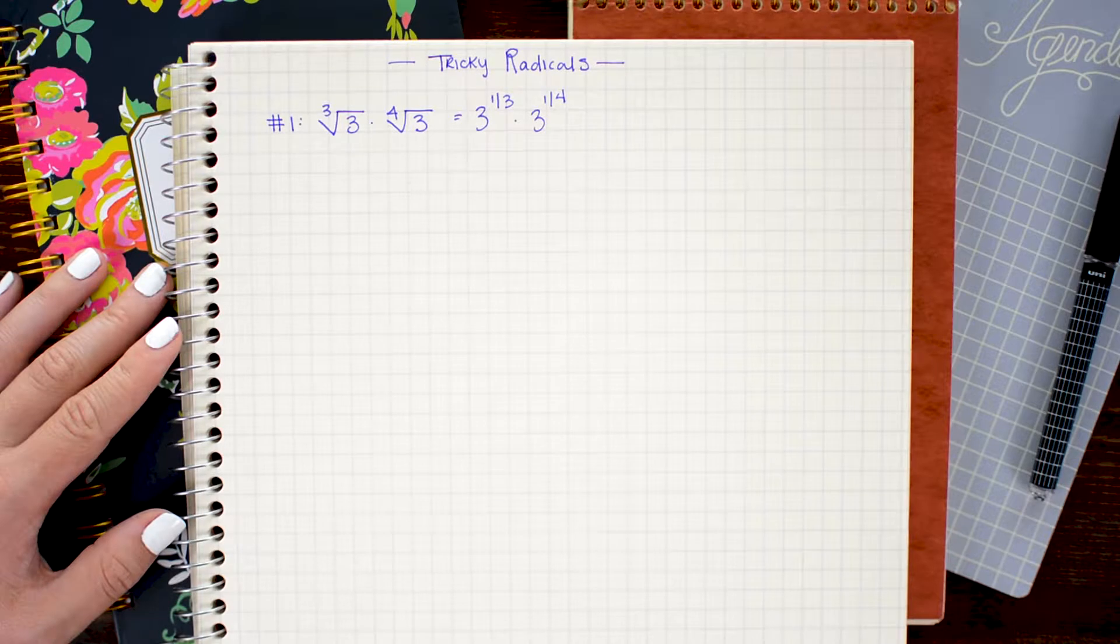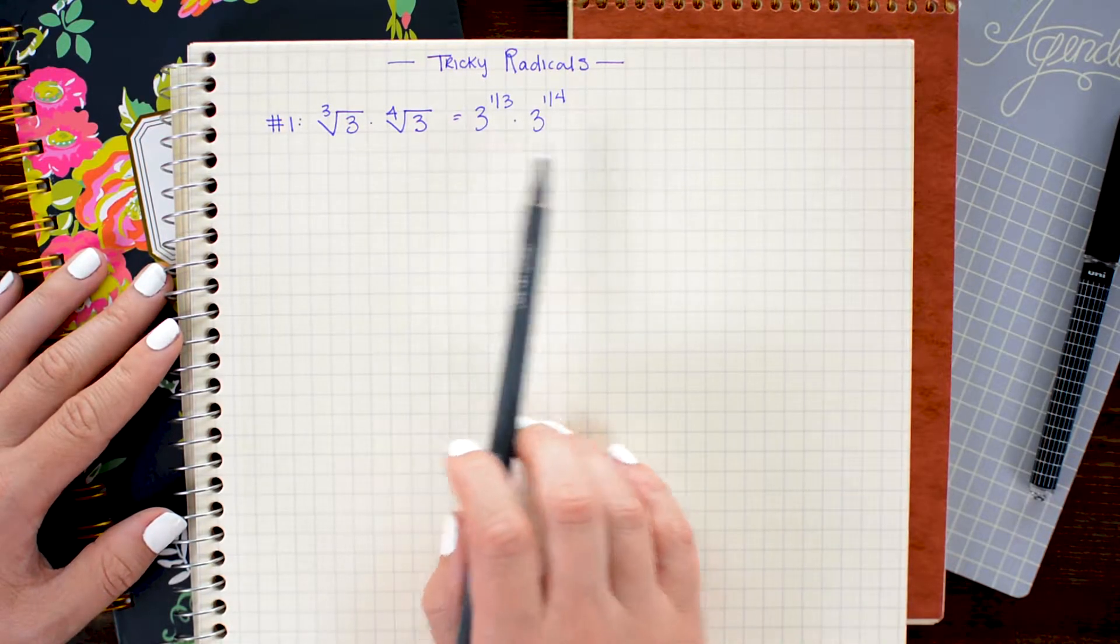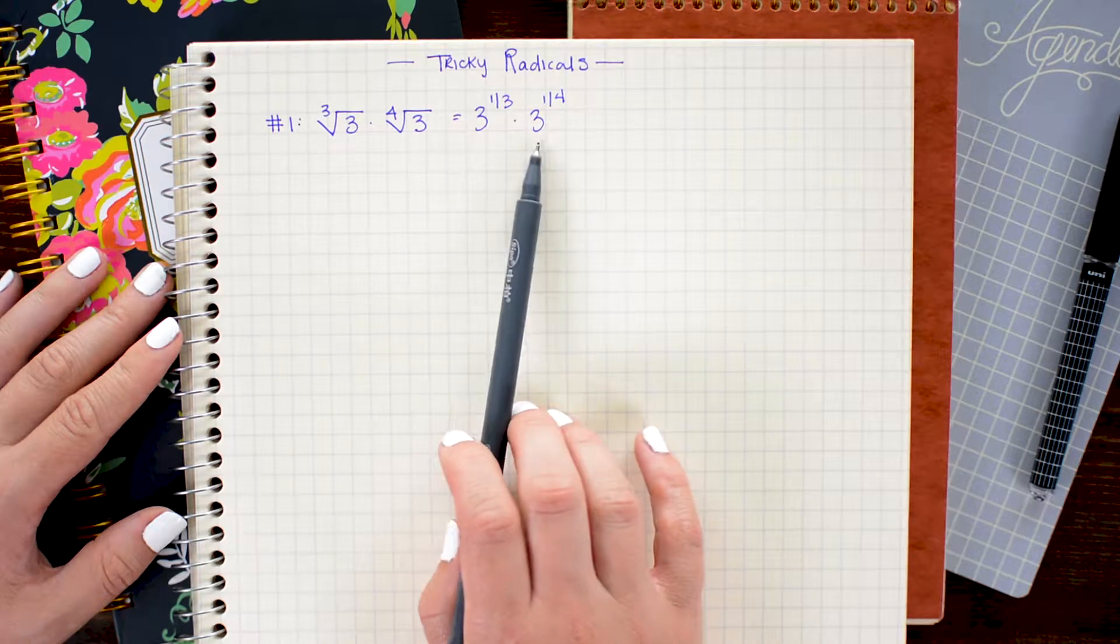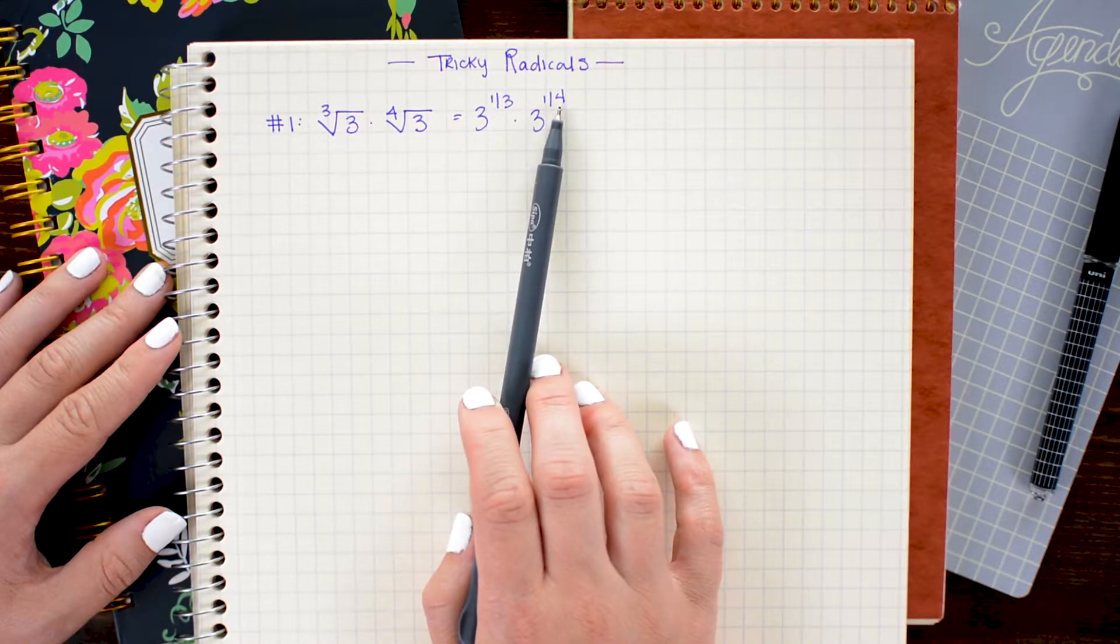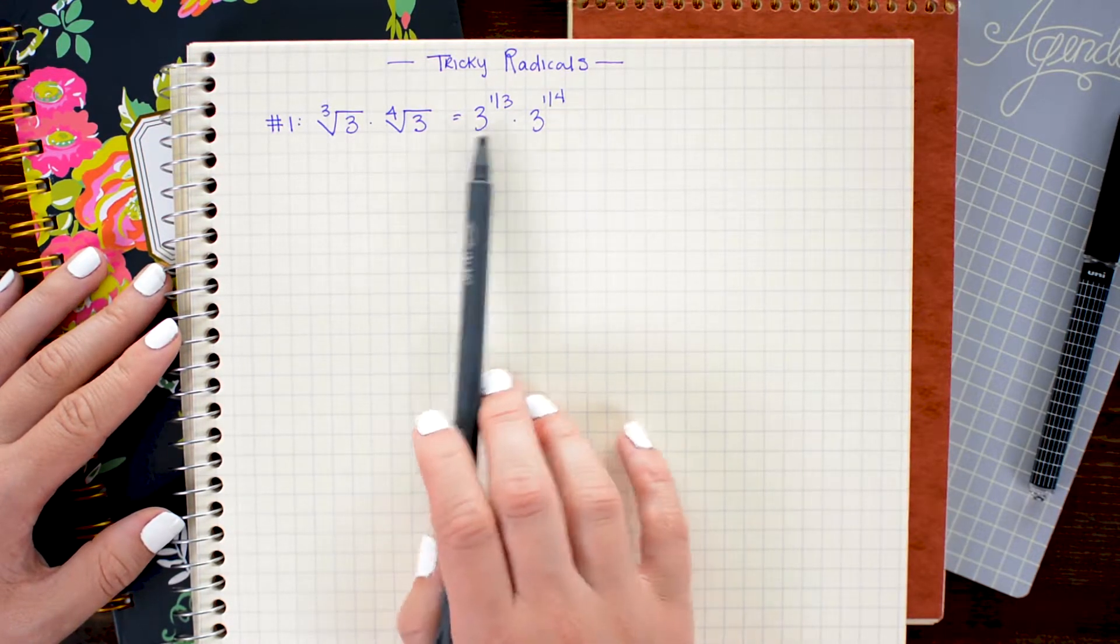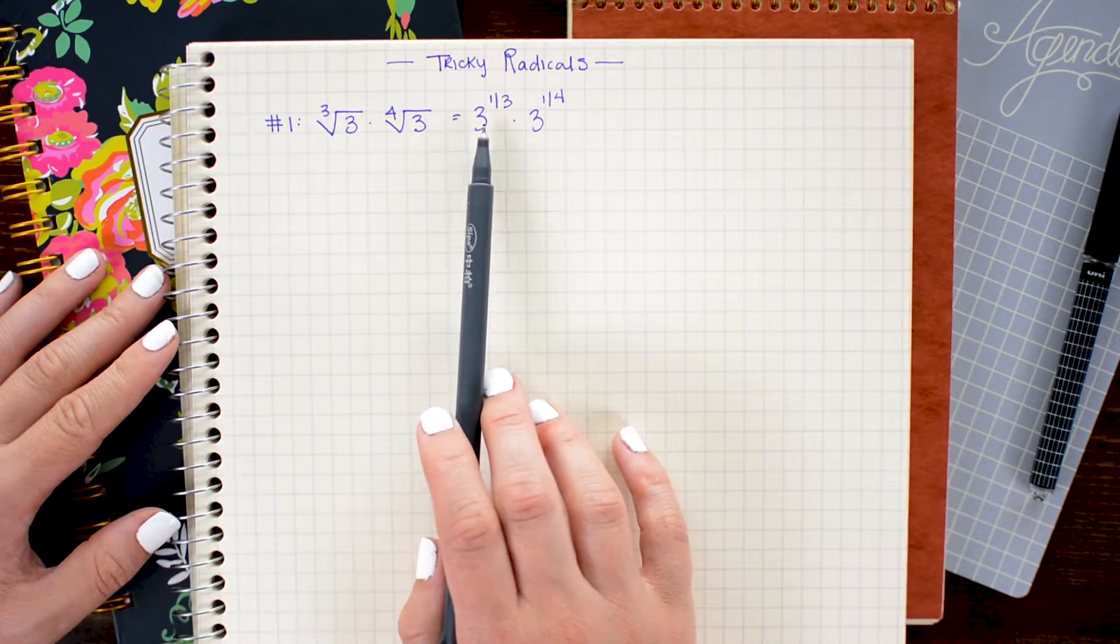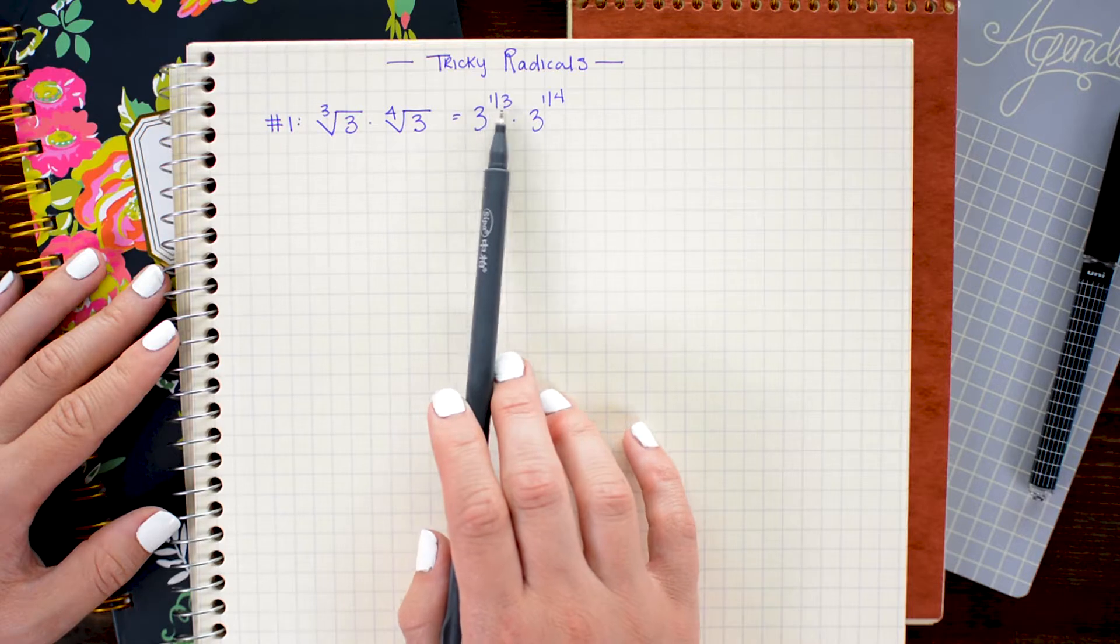Now from here you can see that we have two values being multiplied together and they have the same base but different exponents. Our rule here is simply to multiply these together, I can add the exponents. So this problem really boils down to 3 to the 1/3 plus 1/4.